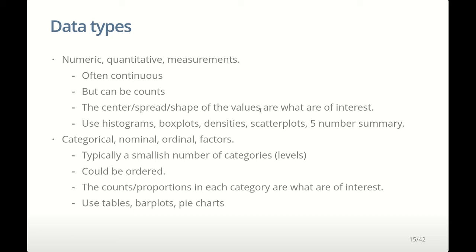For categorical data, the categories could be ordered or not — it probably doesn't matter too much for analysis, but it does matter how you display it on a graph. If data are ordered, it pays to put them on the graph in order. What's of interest is the counts or proportions of each category — for example, the proportion that are high compared to those that are low. You use things like tables or bar charts for this. Two main data types: numeric and categorical.